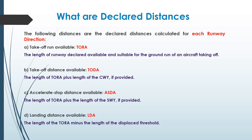The fourth is the landing distance available, or LDA, which is the length of TORA minus the length of the displaced threshold. The threshold is the beginning portion of the runway usable for a landing aircraft. If this threshold is displaced up to a certain distance, we subtract the length of the displaced threshold from TORA to get the LDA. The threshold can be displaced because of mainly three reasons: when there are obstacles on the approach, when the pavement strength is not sufficient to bear the load of the aircraft, or when there are noise abatement procedures in place.